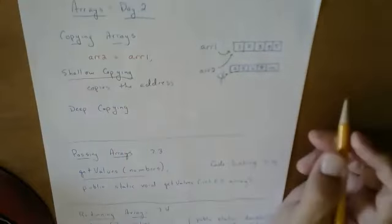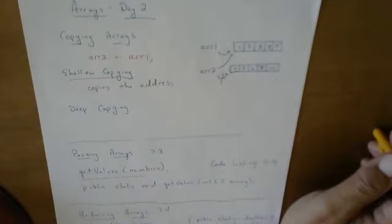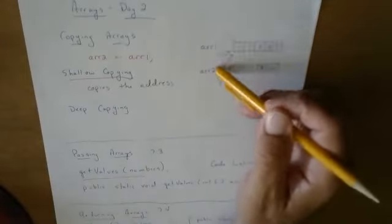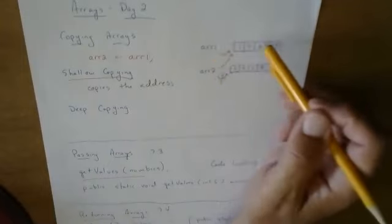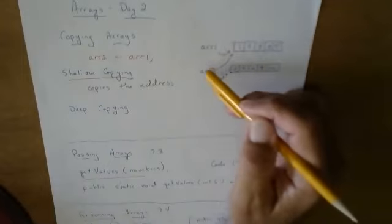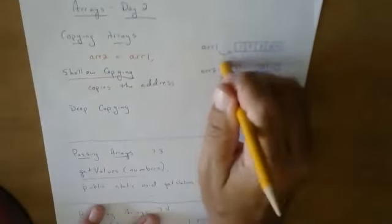Now, are there times that we might want to do that? Yeah. Do I foresee any situation in which we want to do that? No, not very often because what will end up happening is I only have one set of numbers. And if I use this array name, I can manipulate them. Or if I use this array name, I can manipulate them. So this is the idea of what's called shallow copying.